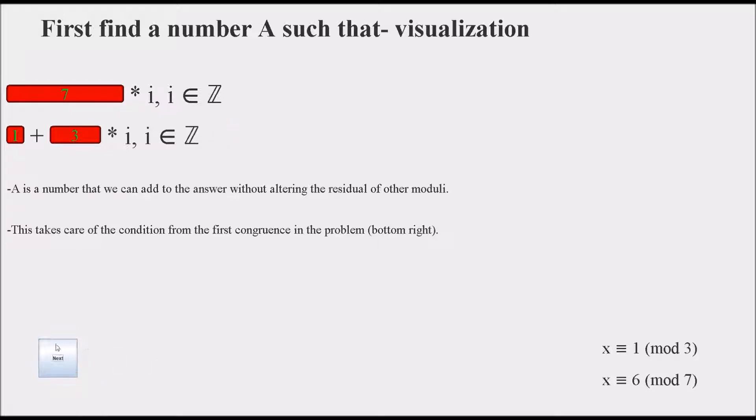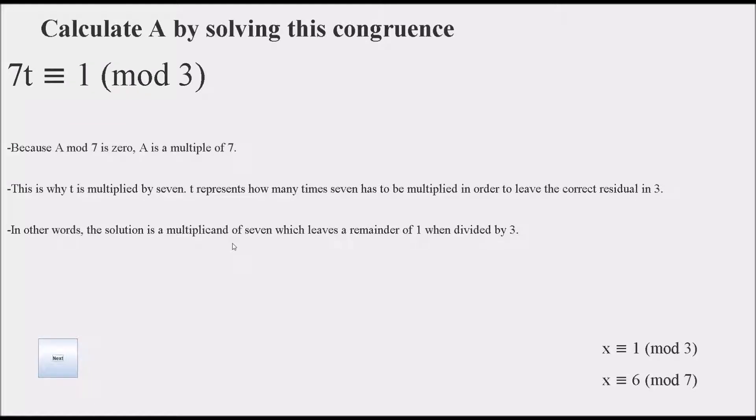So how do we find A? We find A by solving a congruence that starts with the condition that we're trying to meet and then multiplies a different unknown t by 7. We know it has to be a multiple of 7, so by the same concept as the diophantine equations, we just multiply and restrict that t by 7. In other words, the solution is a multiplicand of 7 which leaves a remainder of 1 when divided by 3.